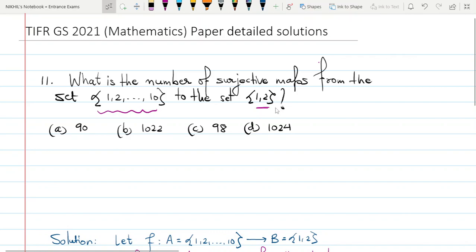And we are given four options, that is, the number of surjective maps are 90, 1022, 98, or 1024.